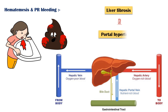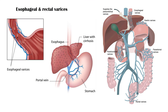This is called portal hypertension. Due to portal hypertension, the venous plexus located in the esophagus and the rectum can enlarge, which are referred to as esophageal and rectal varices, respectively. These varices can rupture and bleed extensively, causing hematemesis and bleeding per rectum.